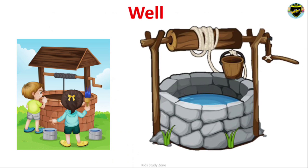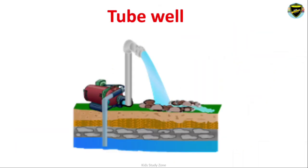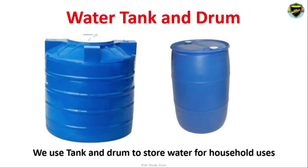We can use the ground water by using a well and pump, tube well, reservoir and canal, which are artificial sources of water constructed by humans to store water for future needs. We also use water tanks and drums to store water for household uses.